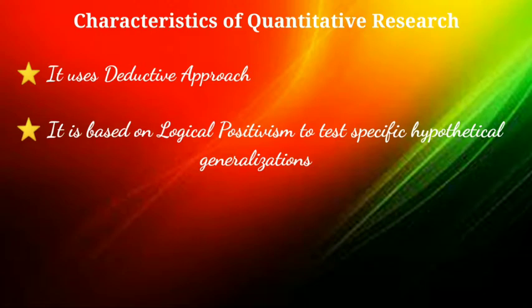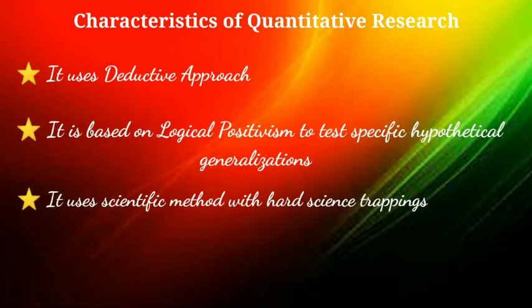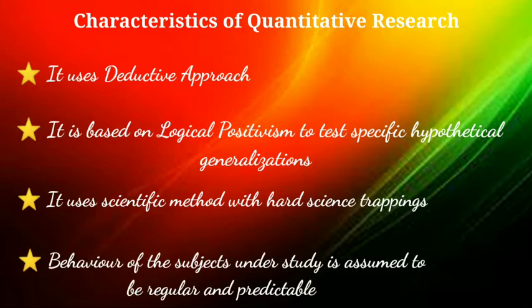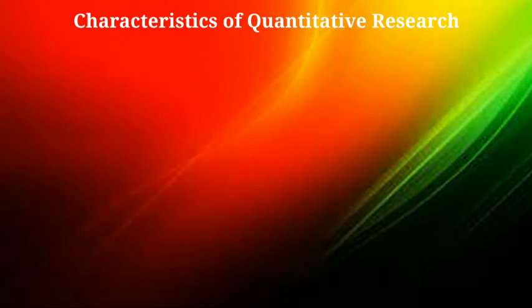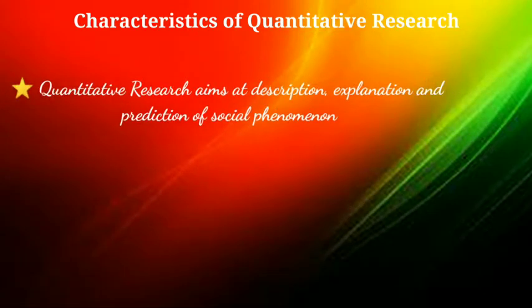With a narrow-angle lens, it uses the scientific method with hard science assumptions. The behavior of subjects under study is assumed to be regular and predictable. Most common research objectives in the quantitative approach aim at description, explanation, and prediction of social phenomena.